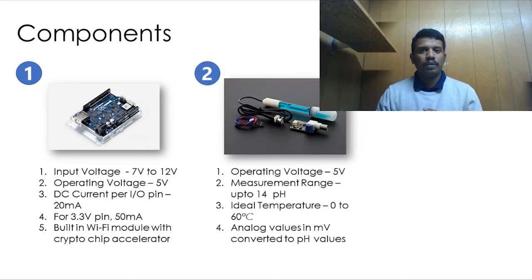The second component we are going to discuss is the pH sensor, which has a measurement range up to 14 pH. It is an analog sensor and it outputs the values in millivolts, which then we will map manually using the code to get the correct pH value. Its ideal operating temperature is between 0 to 60 degrees Celsius, that is it can withstand a temperature of up to 60 degrees Celsius. The measurement range is up to 14 pH, that's 0 to 14 pH.